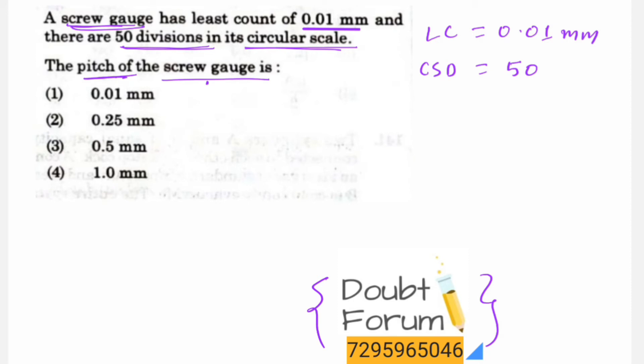The formula is: pitch of screw gauge equals least count multiplied by the number of circular scale divisions. By putting the values of least count and circular scale division in this formula, we can easily find the pitch.